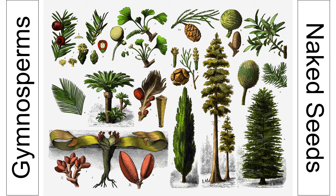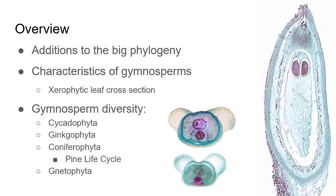The word gymnosperm means naked seed, so we have one big evolutionary leap — we get seeds. These are the first seed plants, but those seeds aren't contained within any kind of vessel, for at least most of the groups. We have seeds and we can send our offspring out with a bunch of extra nutrition so that hopefully they'll have a better chance of survival. In these few videos we're going to look at some additions to the big phylogeny — the characteristics of gymnosperms, and what new traits do we see that are uniting these newly evolved seed plants.